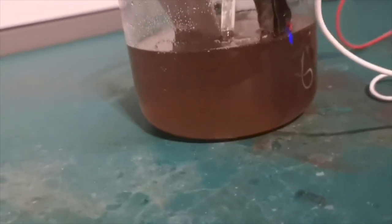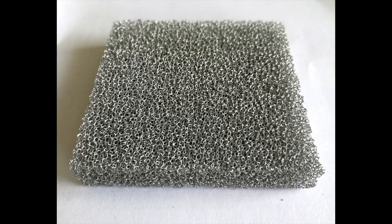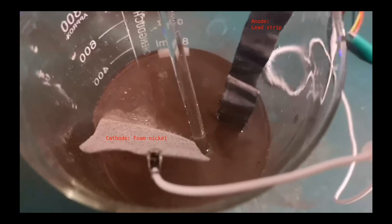We then move on to the electrodes. The cathode can be practically any metal, and I'm using a piece of foam nickel that is nickel electroplated onto sponge. This gives it a large surface area and is ideal for electrolysis.